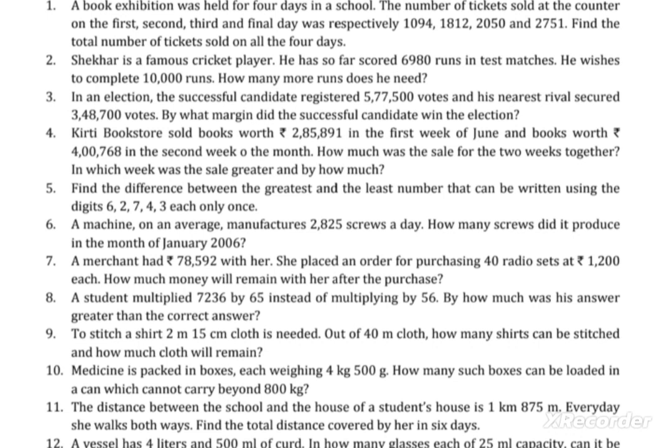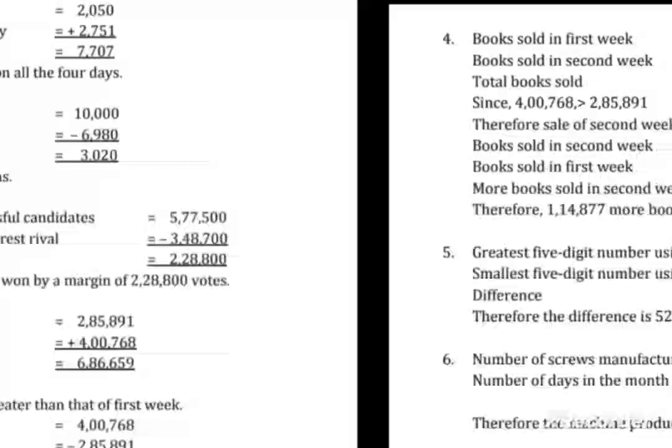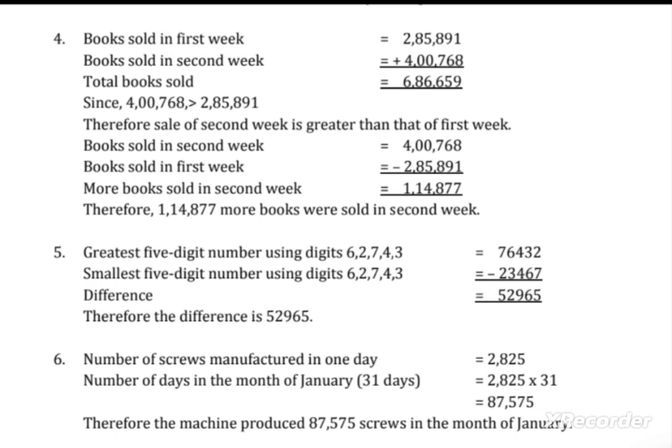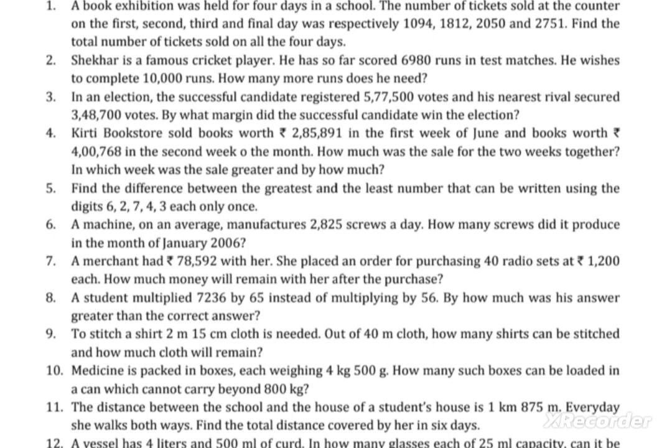The sixth question: a machine on average manufactures 2,825 screws a day. How many screws did it produce in the month of January 2006? You need to know how many days are in January — it has 31 days. Since 2006 is not a leap year, January still has 31 days. So multiply 2,825 screws per day by 31 days.